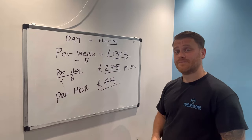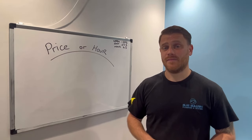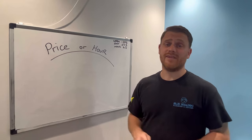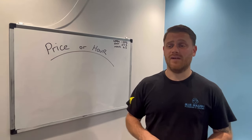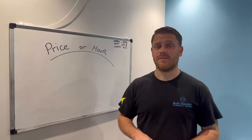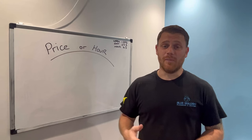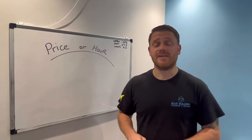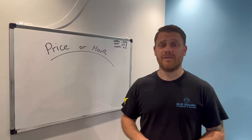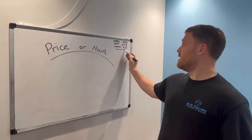So per week you need £1,375; per day £275; per hour £45 for 6 hours of work. Now — do you price the job or charge hourly? The more experienced and efficient you are, the quicker you work. If a three-port valve takes an inexperienced engineer 2 hours but you can do it in 1, are you going to charge less just because you're faster? That doesn't make sense — you're being punished for being efficient. That's where fixed pricing comes in.